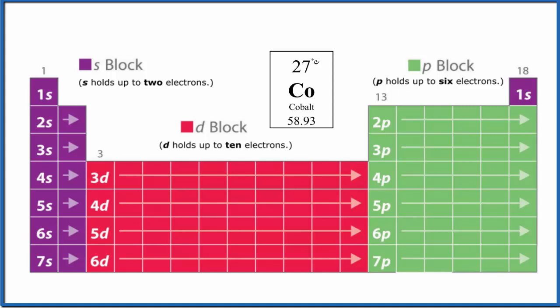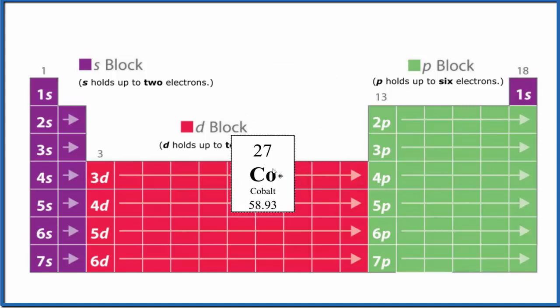Cobalt has 27 protons. That's its atomic number. And because it's neutral, like all of these elements here on the periodic table, it also has 27 electrons. So we need to write the configuration with those for cobalt. And cobalt's right here on the periodic table.